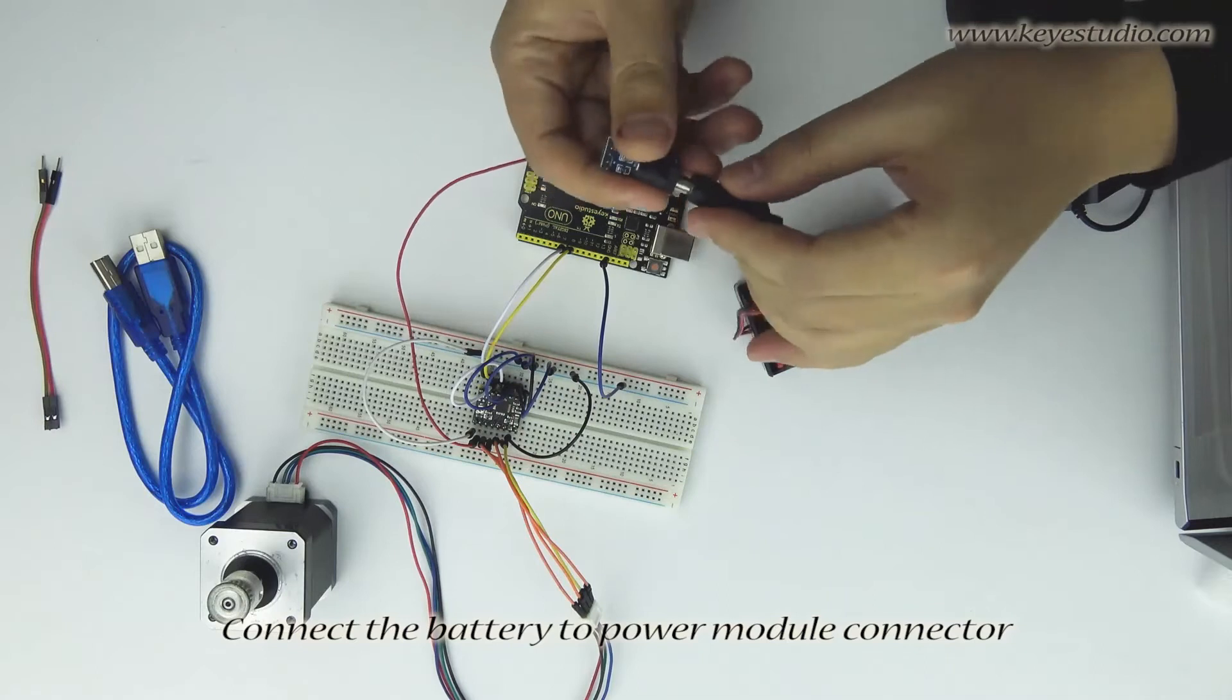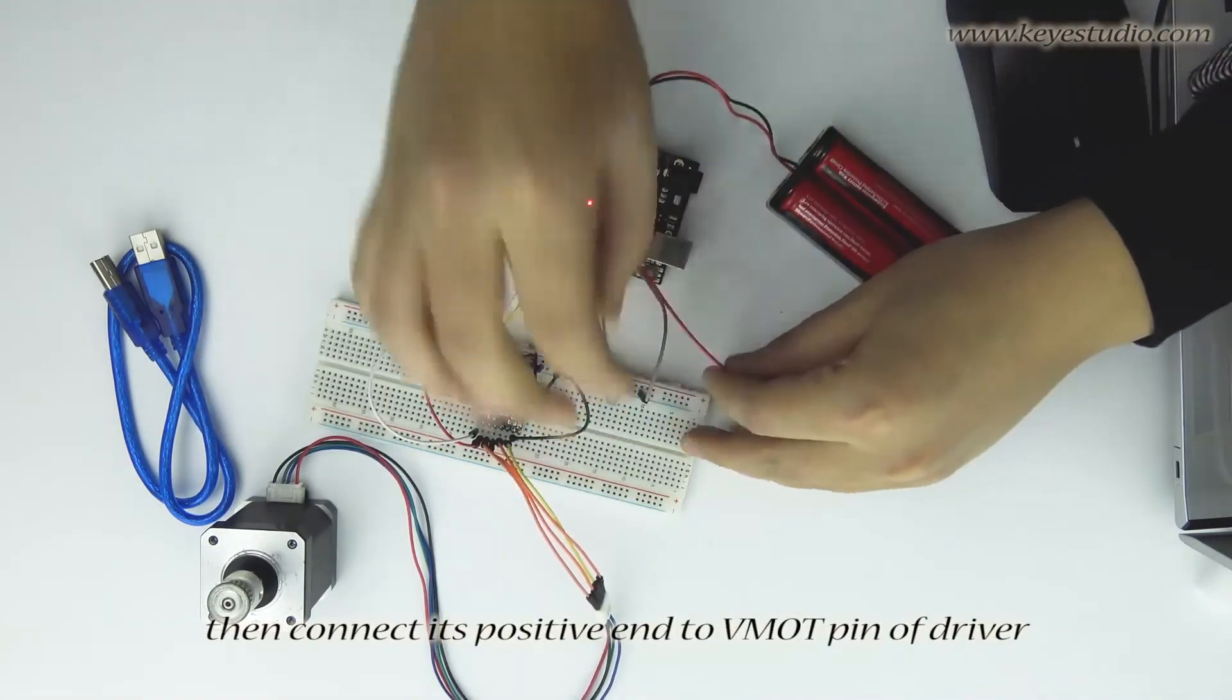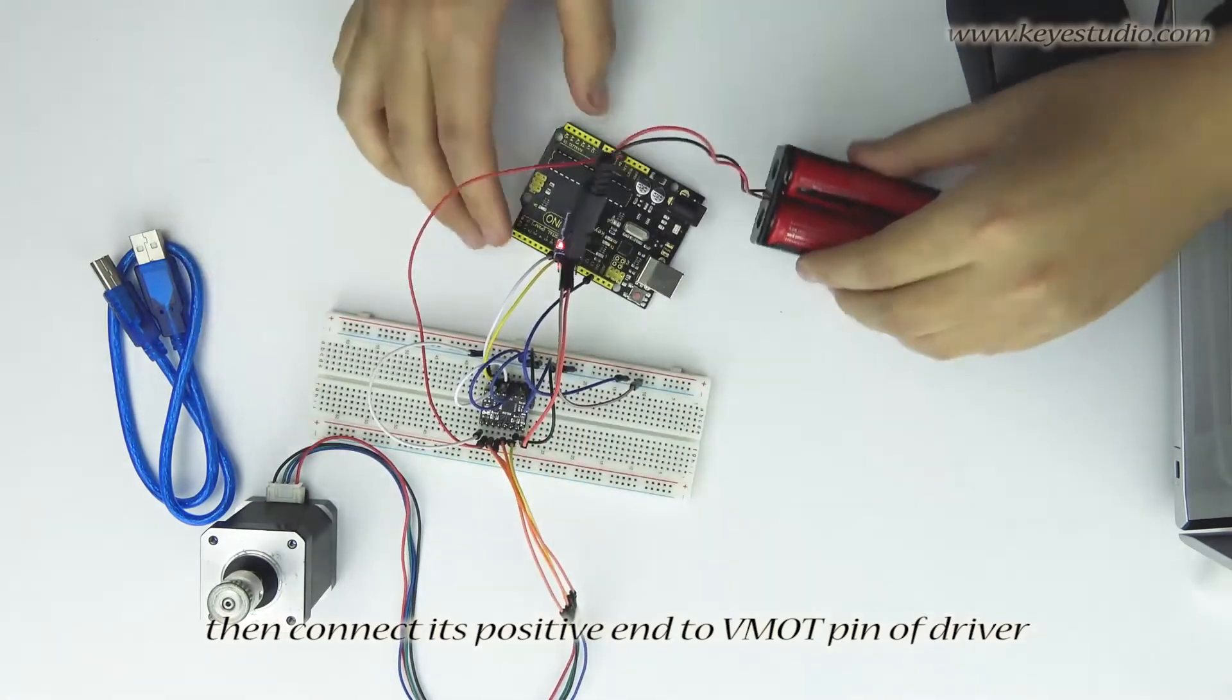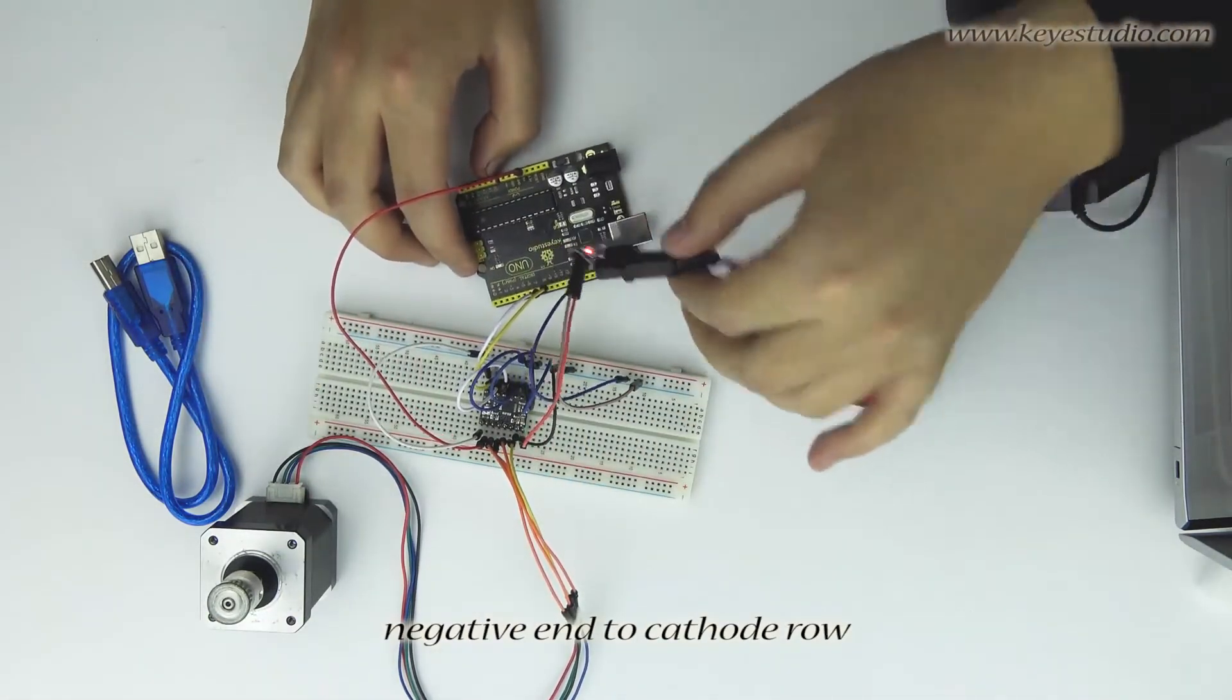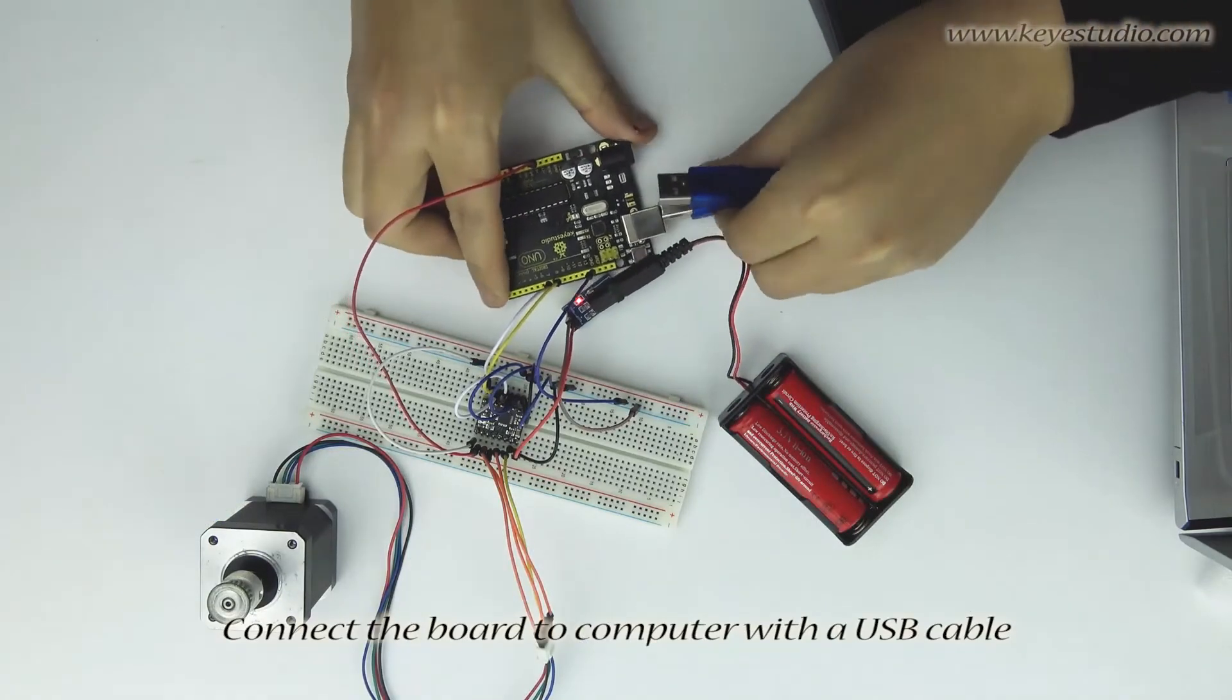Connect the battery to power module connector, then connect its positive end to VMOT pin of driver, negative end to cathode row. Connect the board to computer with a USB cable.